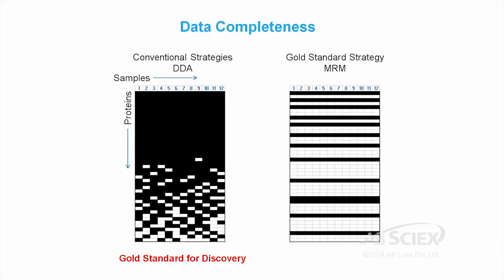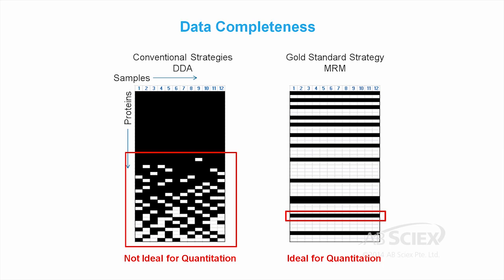Quantitative strategies built on data-dependent acquisition are powerful but can have drawbacks. Strategies that utilize precursor ions for quantitation, such as SILAC or label-free quantitation, lack the selectivity of targeted approaches. Quantitative methods that rely on MS-MS ions, such as iTRAQ, can suffer from incomplete data, especially in complex samples. To address these issues, we have developed a data-independent strategy.